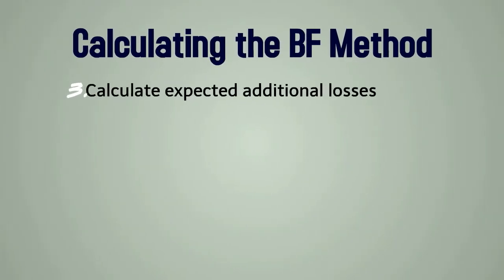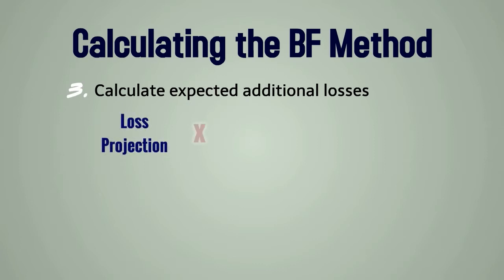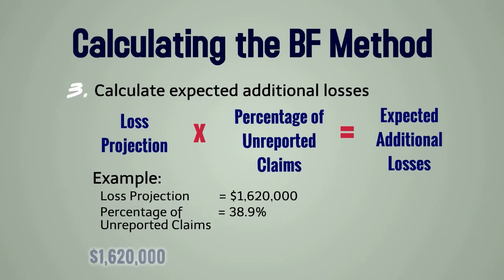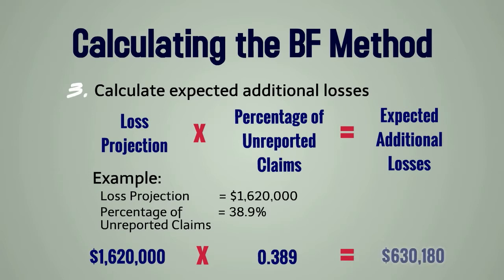In step three, we calculate the expected additional losses. These equal the loss projection times the percentage of unreported claims. In this example, our loss projection is $1,620,000. We just computed the percentage of unreported claims to be 38.9%, so the expected additional losses equal $630,180, computed as $1,620,000 times 0.389.